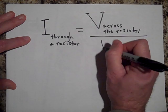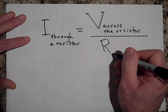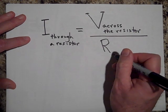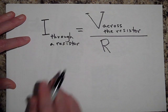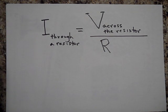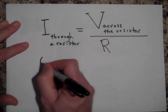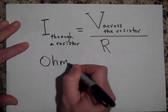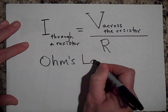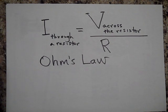...divided by the resistance of the resistor. And that's just the resistance of that resistor. Okay, so that is called Ohm's Law. All right, I'm going to cut this video short. We'll call it a night. Thanks, bye.